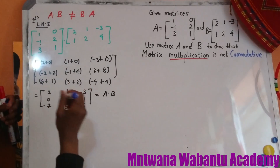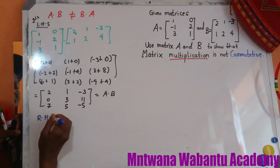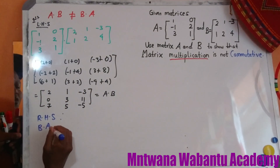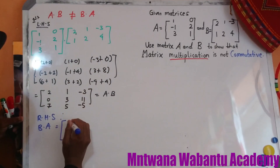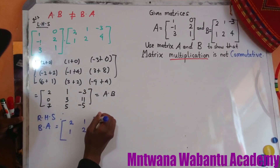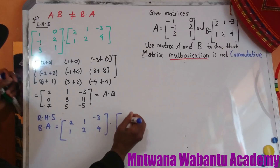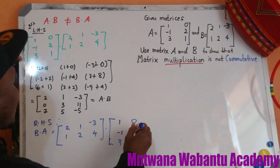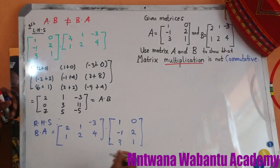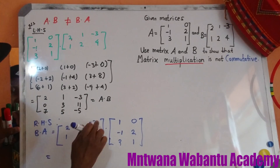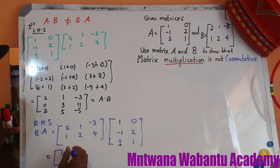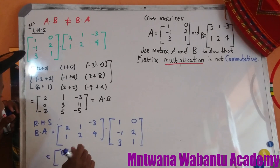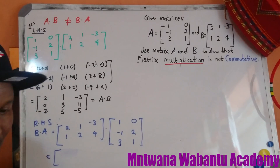Now we go for the right-hand side. The right-hand side means B times A. So B times A — B is 2, 1, 1, 2, negative 3, 4, and we times by A which is 1, negative 1, 3, 0, 2, 1. Same approach — first row times column. 2 times 1 plus 1 times negative 1 — wait, no, I apologize. Let me start again.